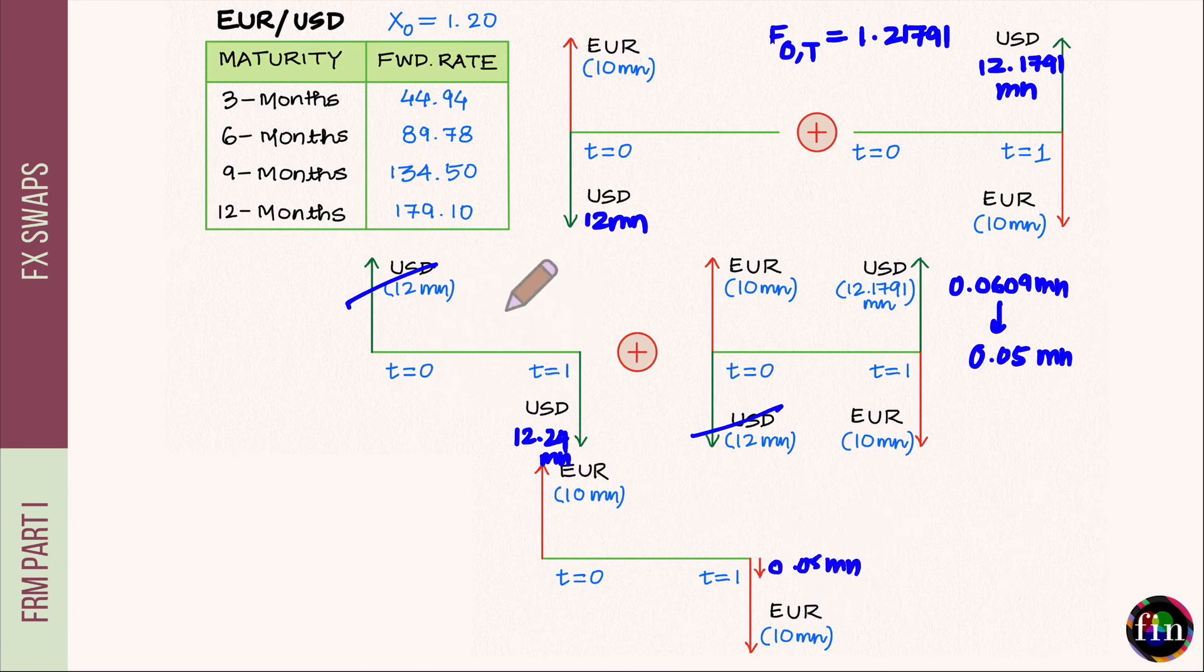My net cash flow diagram looks like this: receiving 10 million euros, paying out these 10 million euros plus this tiny amount of 0.05 million euros. By combining local borrowing with the FX swap, my firm has generated financing in euros, effectively paying an interest rate of 0.05 divided by 10, which is approximately 0.5%.